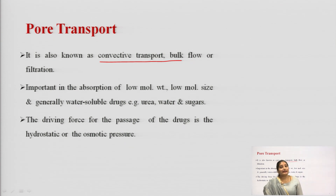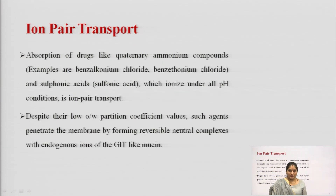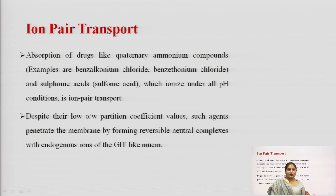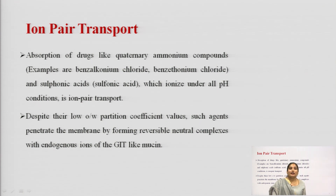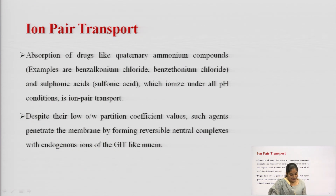The next transport process in transcellular transport is the ion pair transport process. This is applicable for the absorption of quaternary ammonium compounds, for example benzalkonium chloride, benzethonium chloride, or sulfonic acid. These quaternary ammonium compounds ionize under all pH conditions, which is why this transport is known as ion pair transport.